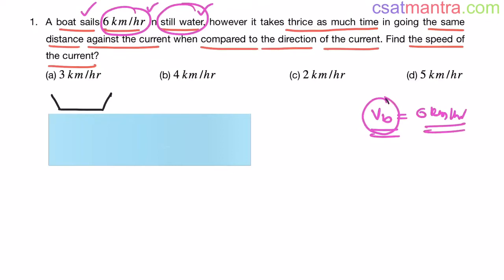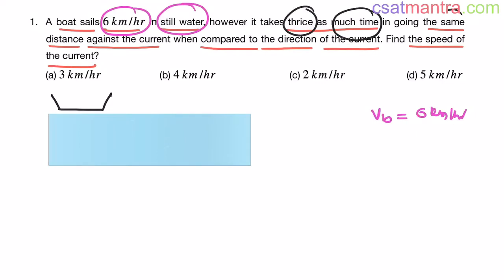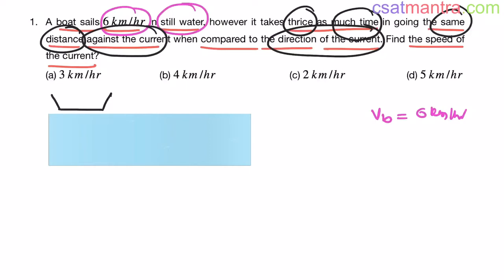Whenever they give boat velocity, it always means boat velocity in still water only. So this is pure boat velocity: 6 km per hour. Now, the river is moving — that's the current. We don't know the river velocity, so let's call it VR.